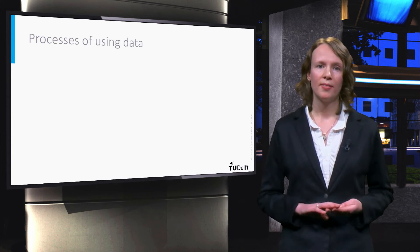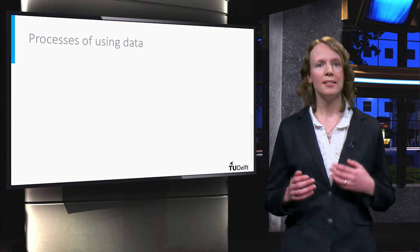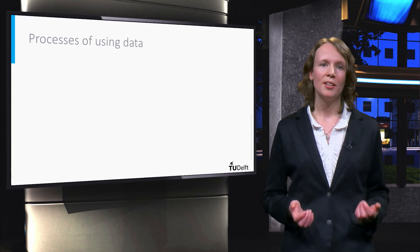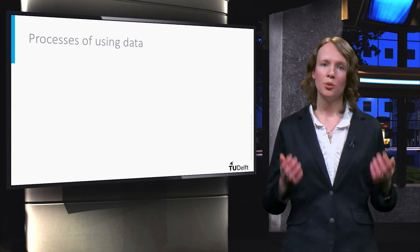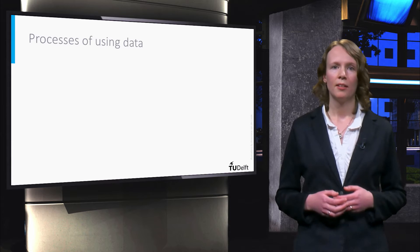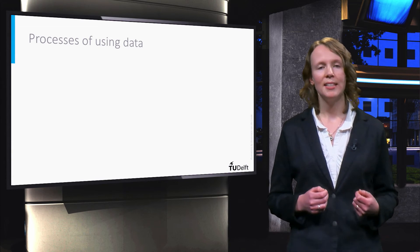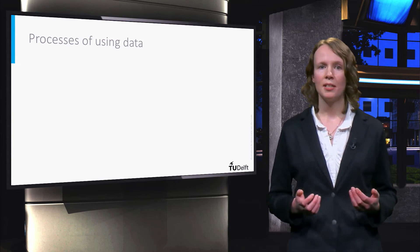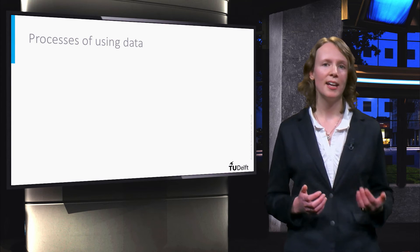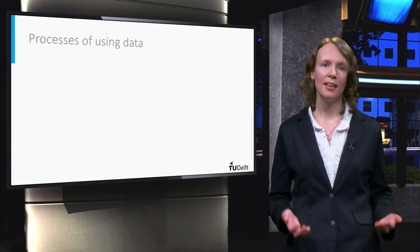Fourth, when open government data is found, it can subsequently be used. Often the data user needs to download the data to be able to work with it. Open government data can be used in many different ways — for instance, by cleansing, analyzing, visualizing, enriching, combining and linking it.